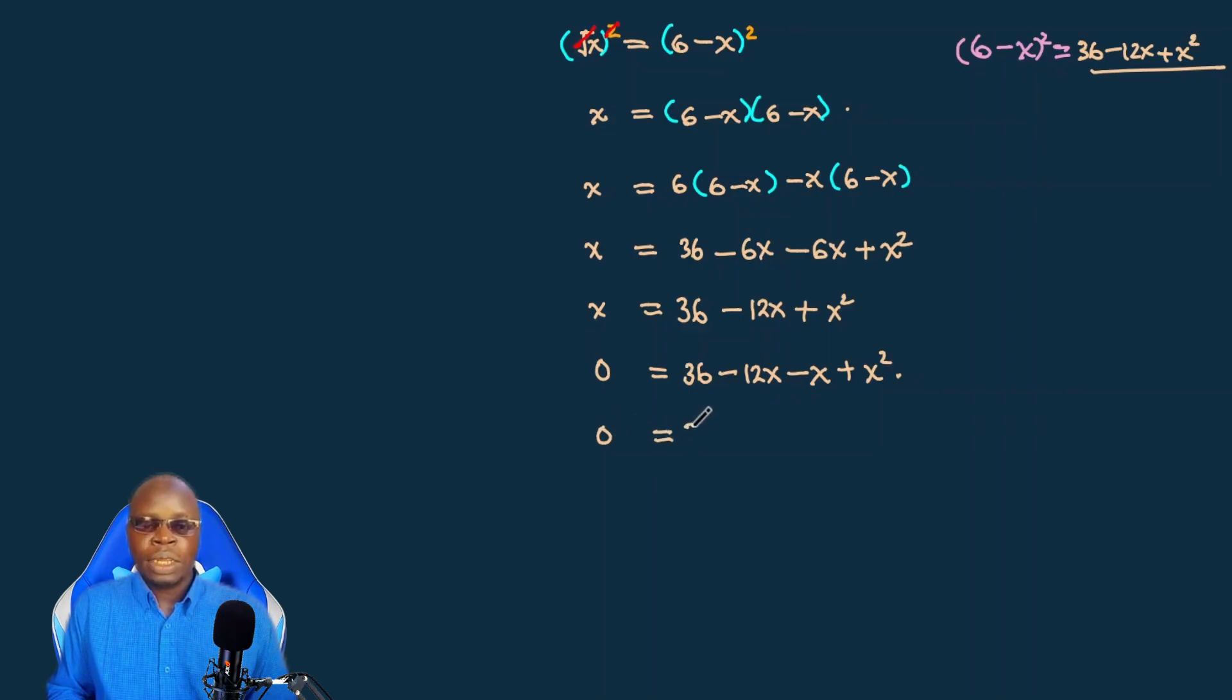That is negative 12x minus x, that is 13, and plus x squared. So we have gotten a quadratic equation which we can rearrange that the zero is in this side, so we just only rotate.